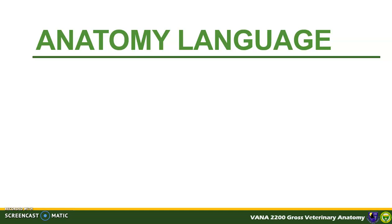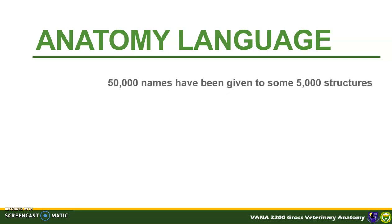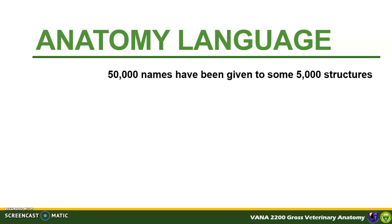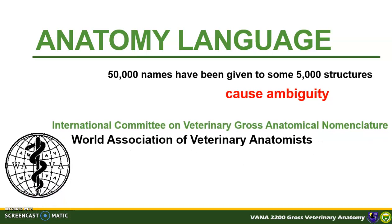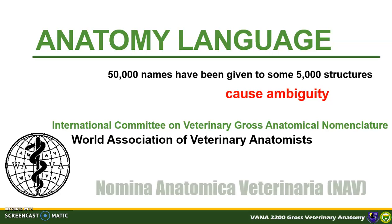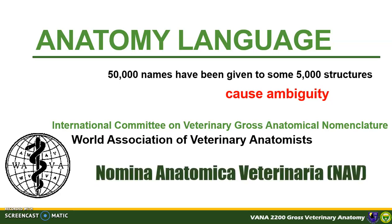The terms used for structures of the body are numerous, and in the course of medical history, about 50,000 names have been given to some 5,000 structures, leading to considerable ambiguity. In the hope of reducing this confusion, the International Committee on Veterinary Gross Anatomical Nomenclature, through the World Association of Veterinary Anatomists, prepared and published an internationally agreed-on vocabulary: the Nomina Anatomica Veterinaria, or NAV. It was first introduced in 1968 and has since obtained wide acceptance, and is currently in the 6th edition.